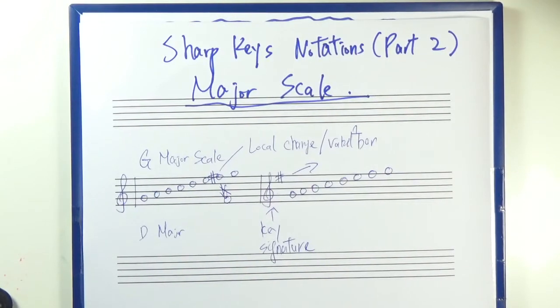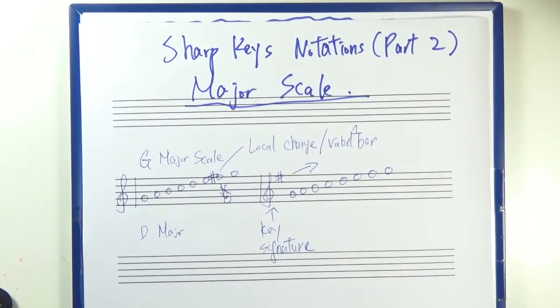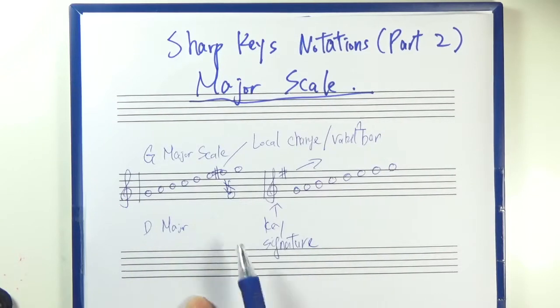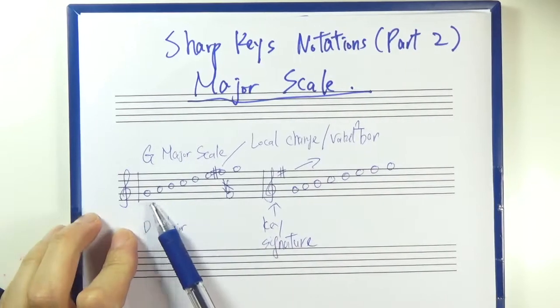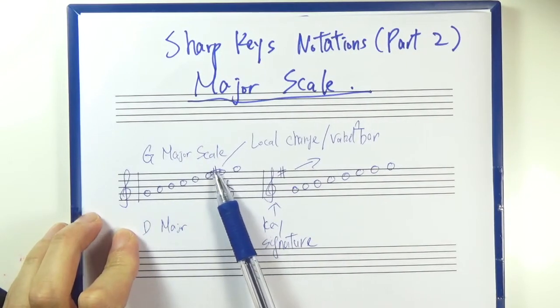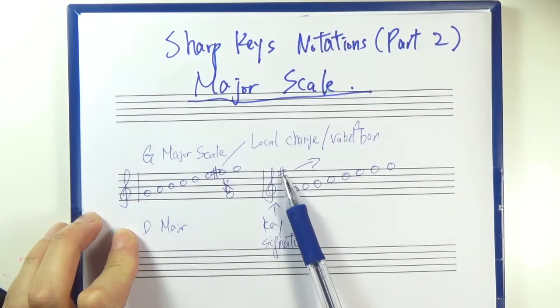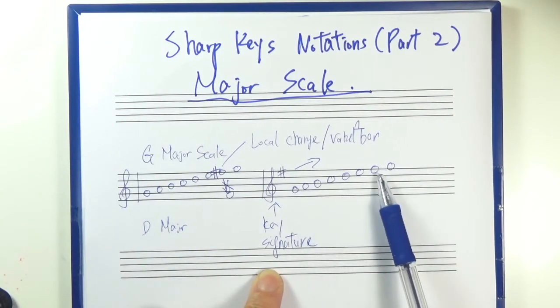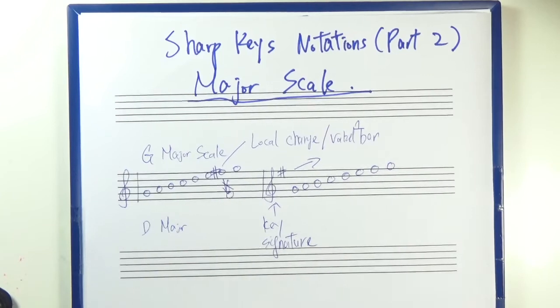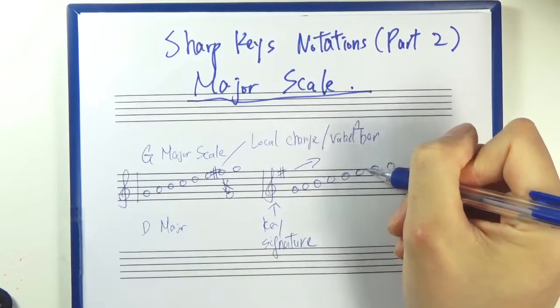Alright, so we're in part 2 of sharp key notations for major scale. So let's take a look at these two major scales. So this one has an F sharp here. This one has an F sharp as part of the key signature. And the F here is without the sharp sign.